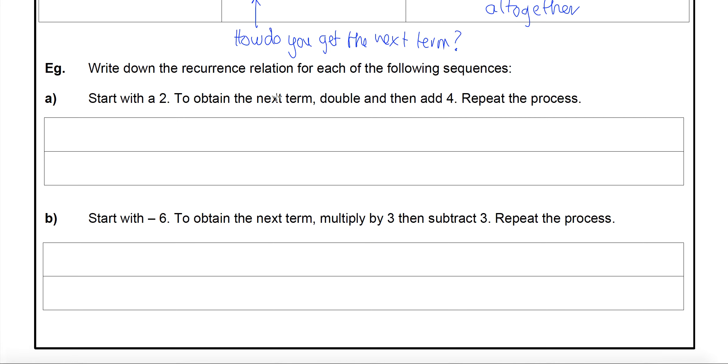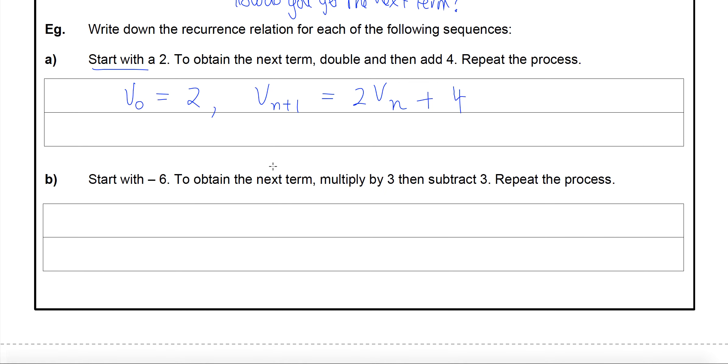We actually write it all together in one sentence, separated by this little comma here. So all together, where do we start off? Comma. How do we get this next term? Well, you take the one before it and you add 5. We'll have a little go underneath with writing them. I've got start with a 2, to obtain the next term we double then add 4 and repeat. When it says repeat the process, it's basically saying that it's recursion that's going to happen. Start with a 2 means that our starting term, remember we call that V_0, must be 2. And we'll add a comma. Next, to get the next term, the next term we refer to as N+1. So to get the next one, we double, so times by 2. So double the one that comes before it, 2 times V_N, and then we add 4.